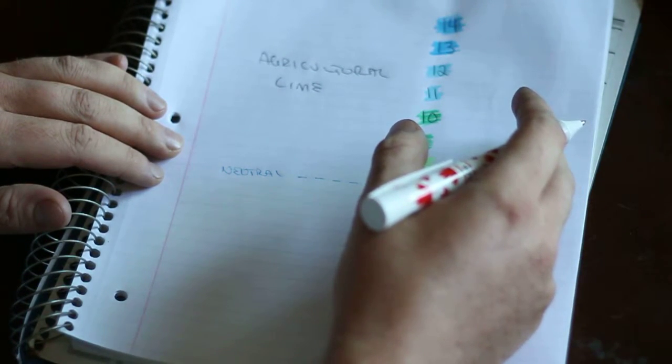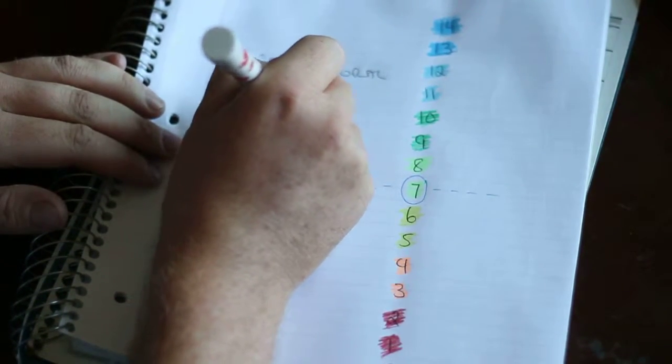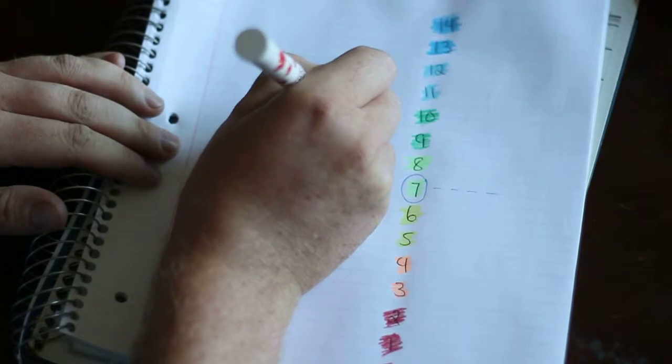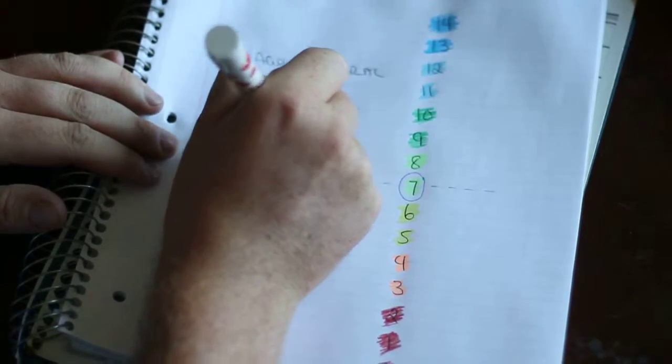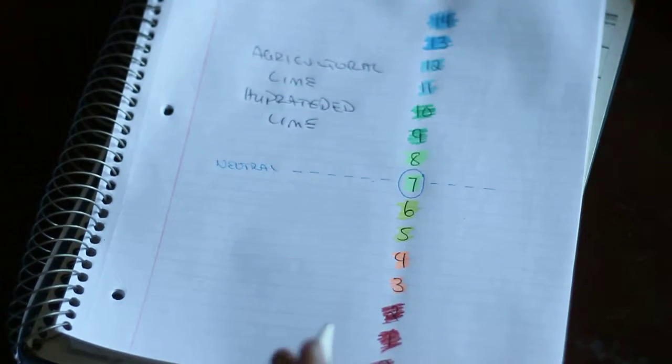If you wanted a quicker version of that you can do hydrated lime, and what the hydrated lime is essentially is what they do is they chemically alter the agricultural lime by adding water and that is going to be a much faster acting but shorter lasting way to increase the alkalinity of your soil.